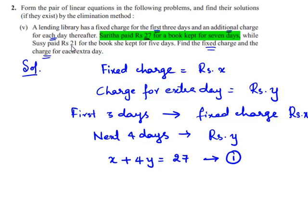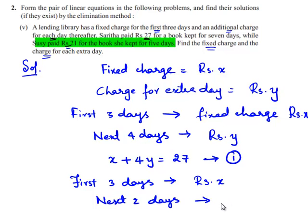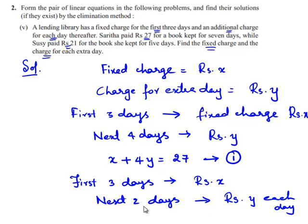Now, using the second condition: for the first 3 days there will be rupees x of fixed charge for Susie. For the next 2 days there will be an extra charge for each day, which is rupees y for each day. So this equation becomes x plus 2y is equal to 21, the amount she paid. This is equation number 2.